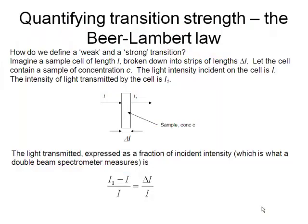So we need some way of quantitatively assessing the strength of a transition. What is the intensity of the electronic absorption? And we do that with something called the Beer-Lambert law.